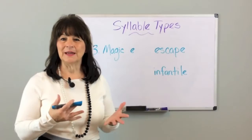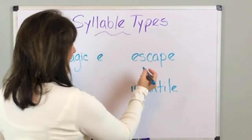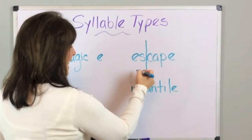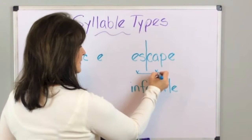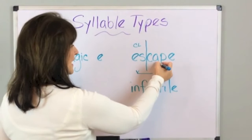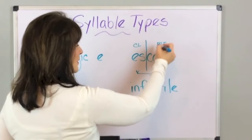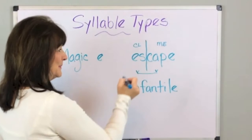Let's decode the word escape. You have a vowel-consonant-consonant-vowel, so we divide the word there. Look for your vowel here and your vowel here, draw your bridge, and now you have the E with a consonant after it — making it a closed syllable — and you have your A-E, making it a Magic E with a long vowel sound. So you have a short vowel sound and a long vowel sound, and you pronounce this: escape.